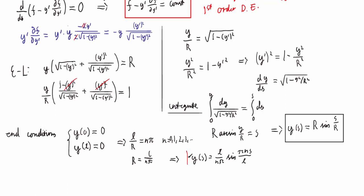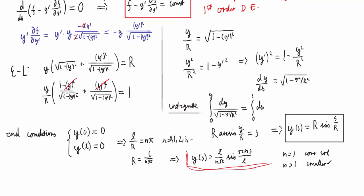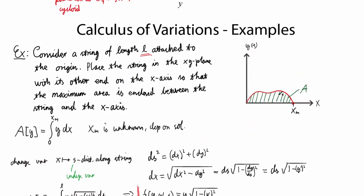In principle these are all solutions, but n can be any value from 0 to infinity and also negative — so there are many of them, and only one can yield the correct maximum. We can see by inspection that the only solution which does not cross zero — and isn't just y = 0 — is obtained for n = 1. If n is greater than 1, the string crosses the x-axis, enclosing a smaller area.